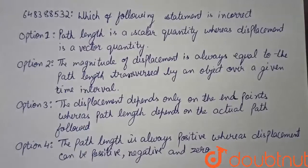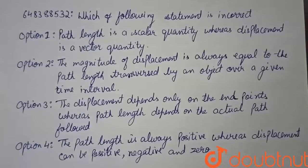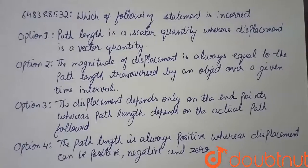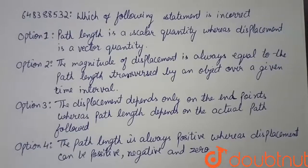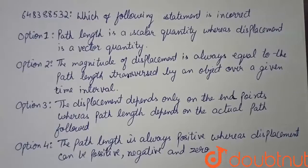The question is: which of the following statements is incorrect? Option 1 says that path length is a scalar quantity whereas displacement is a vector quantity. This statement is true, as displacement is a vector — it has both magnitude and direction.